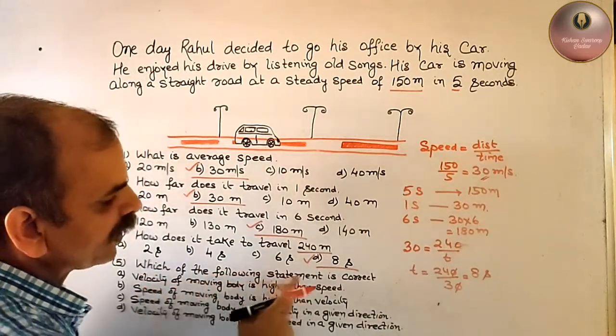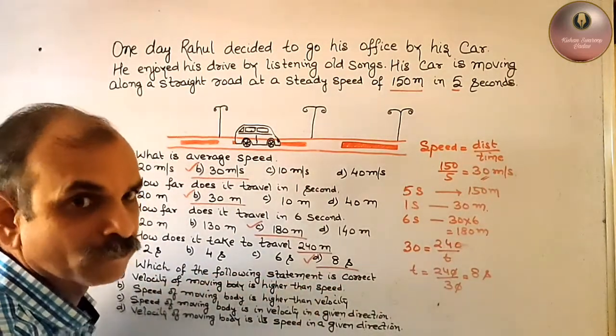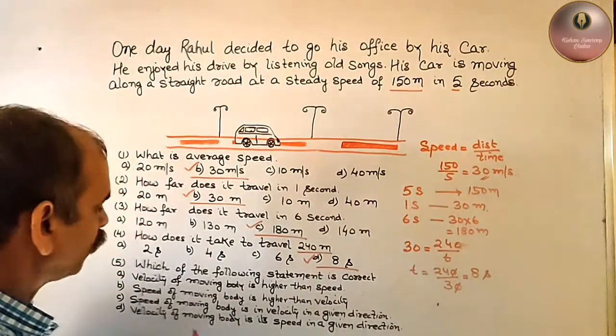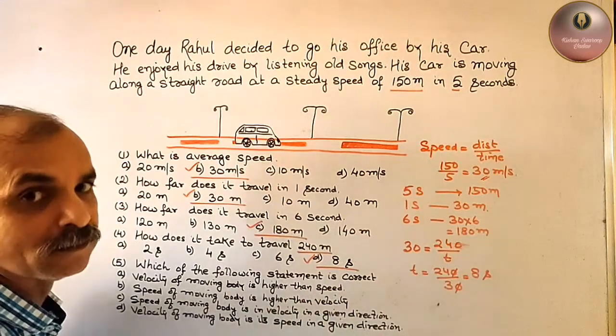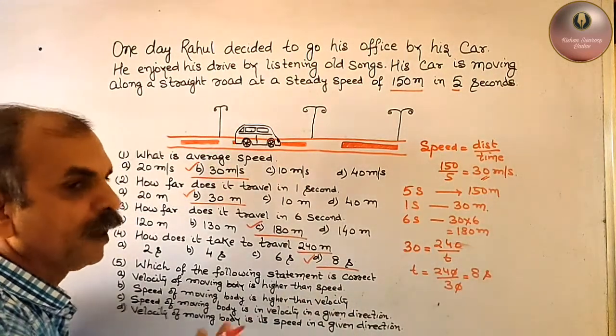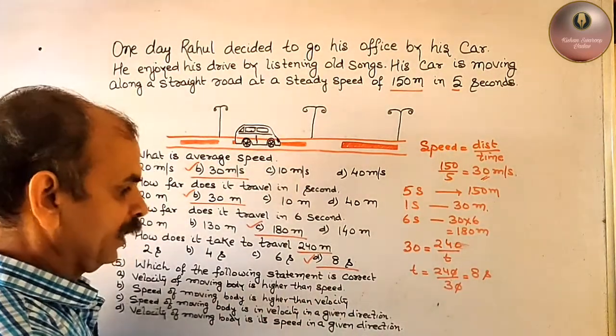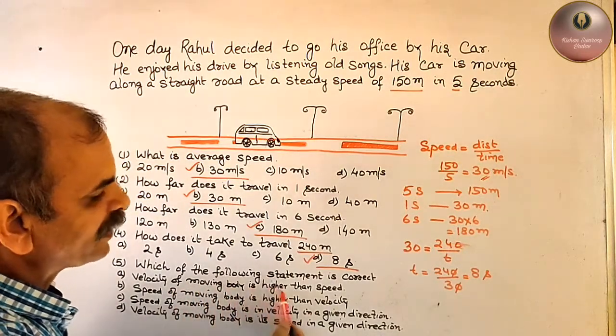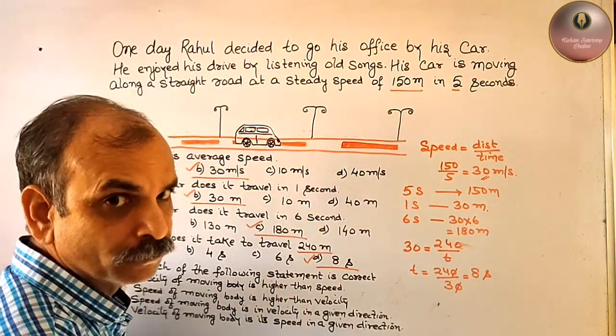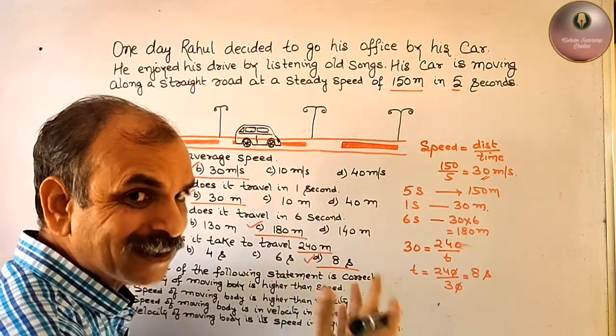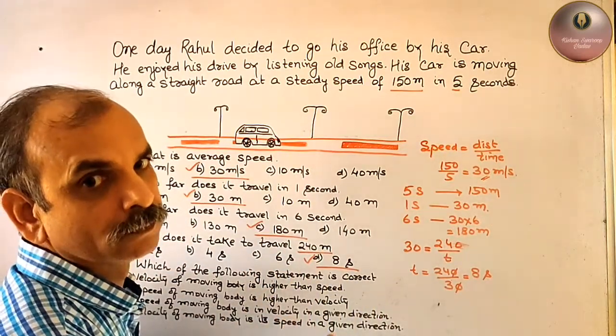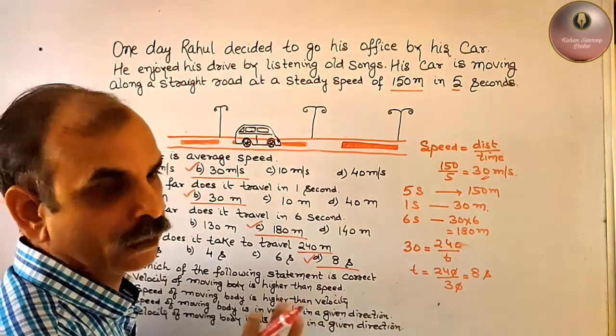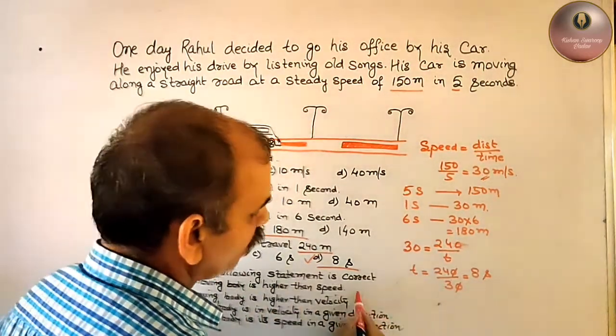Which of the following statement is correct? Velocity of the moving body is higher than speed. We have to understand what is the velocity of moving body is higher than speed. Speed is higher than speed? No. We can say no.